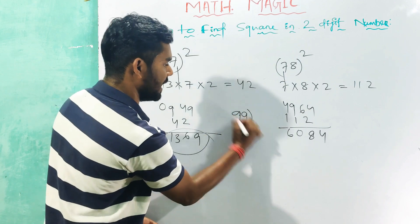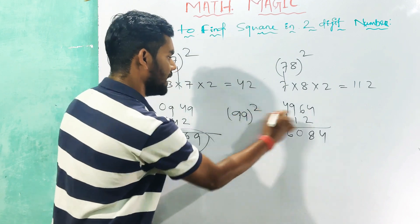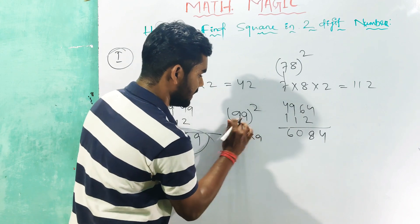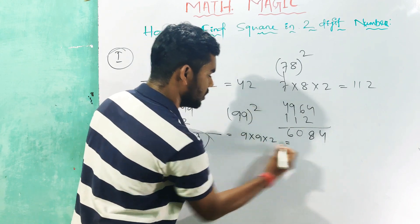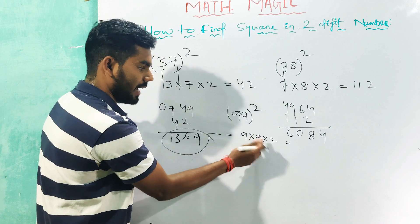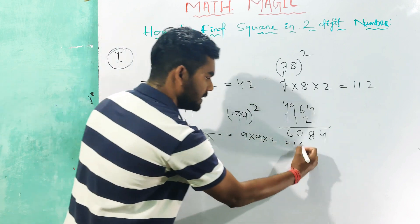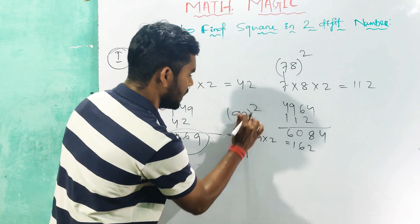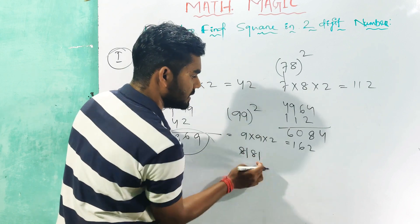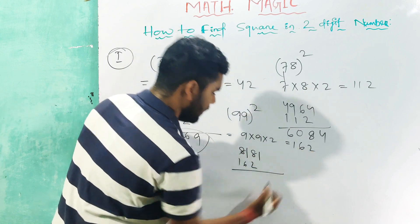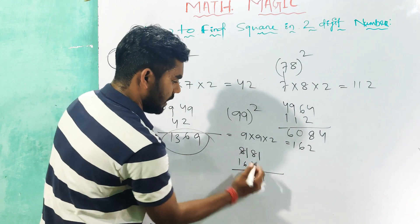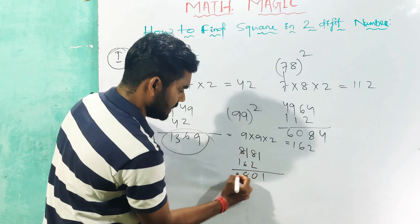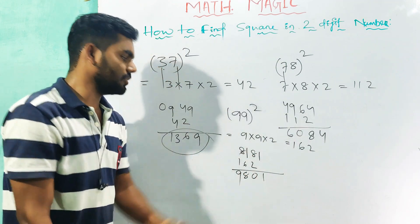Next example: 99 whole square. First step: 9 into 9 is 81, into 2 is 162. 9 squared is 81. So 162 plus 2 is 8, plus 2 is 10. This is your answer.